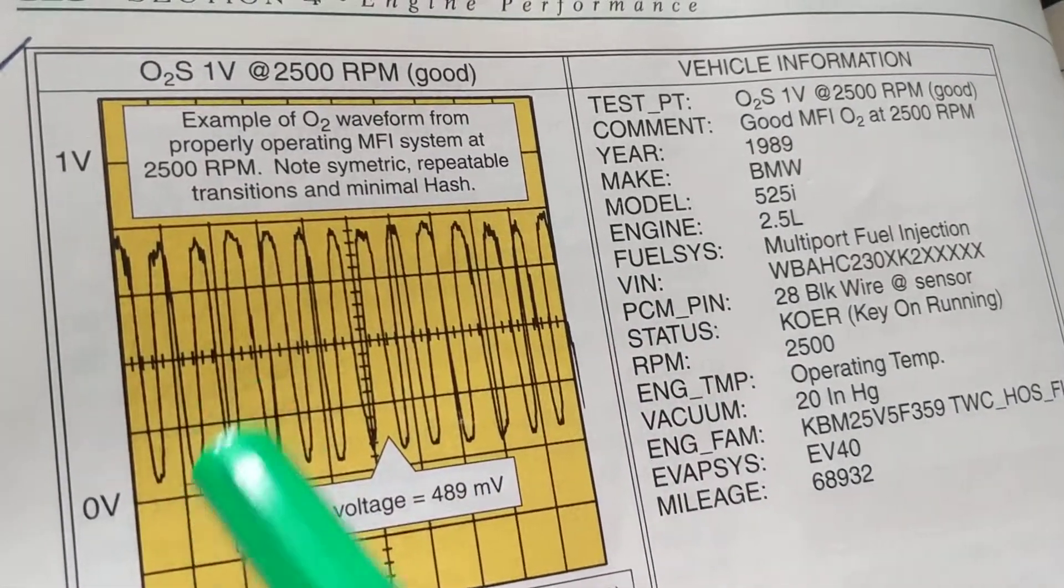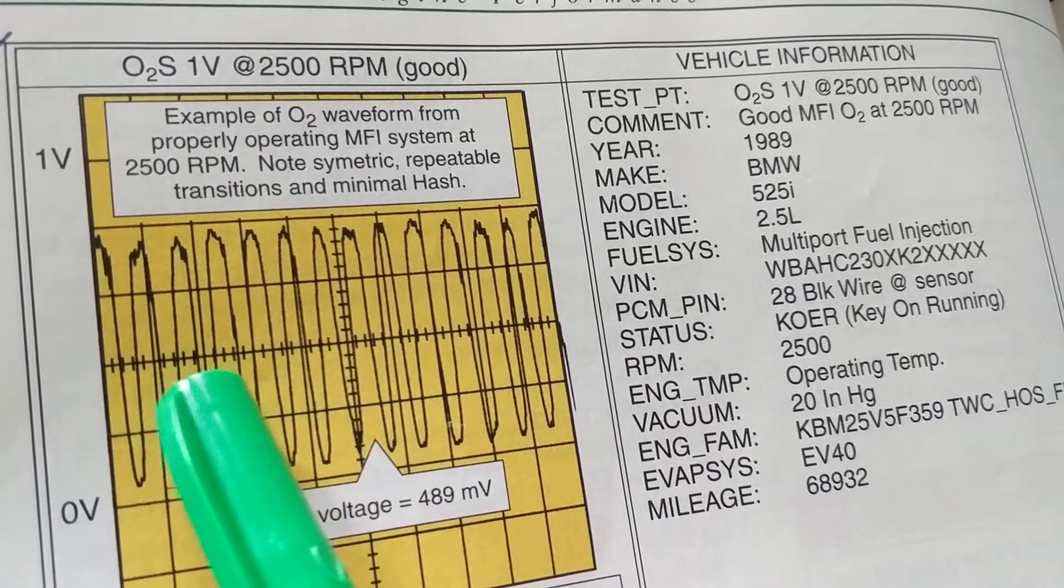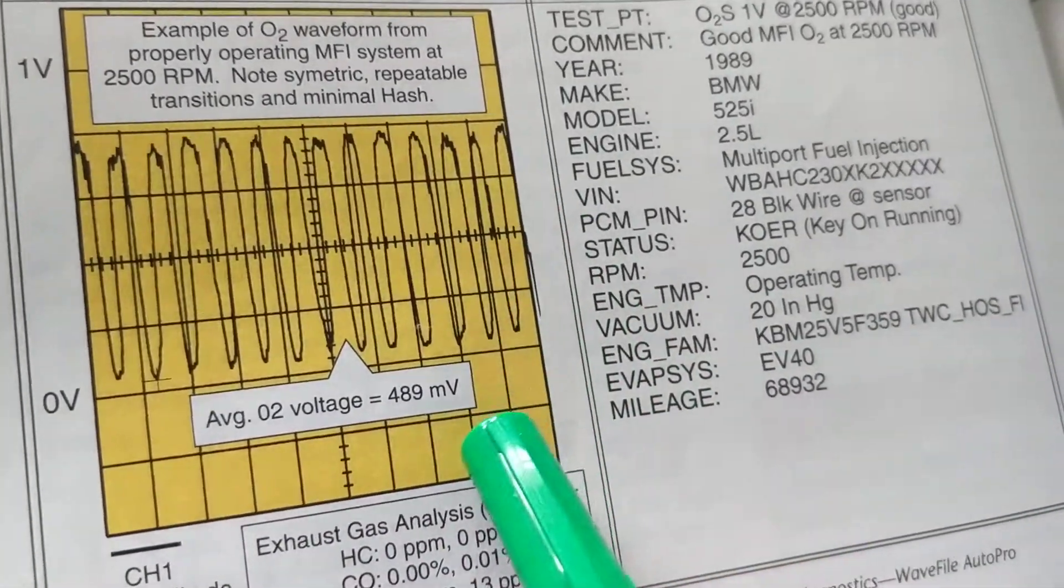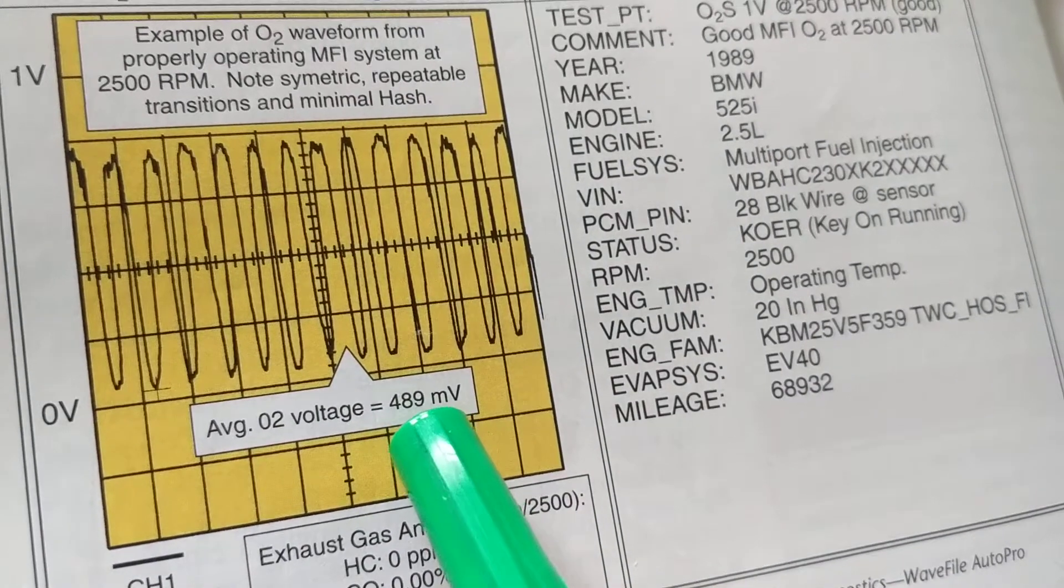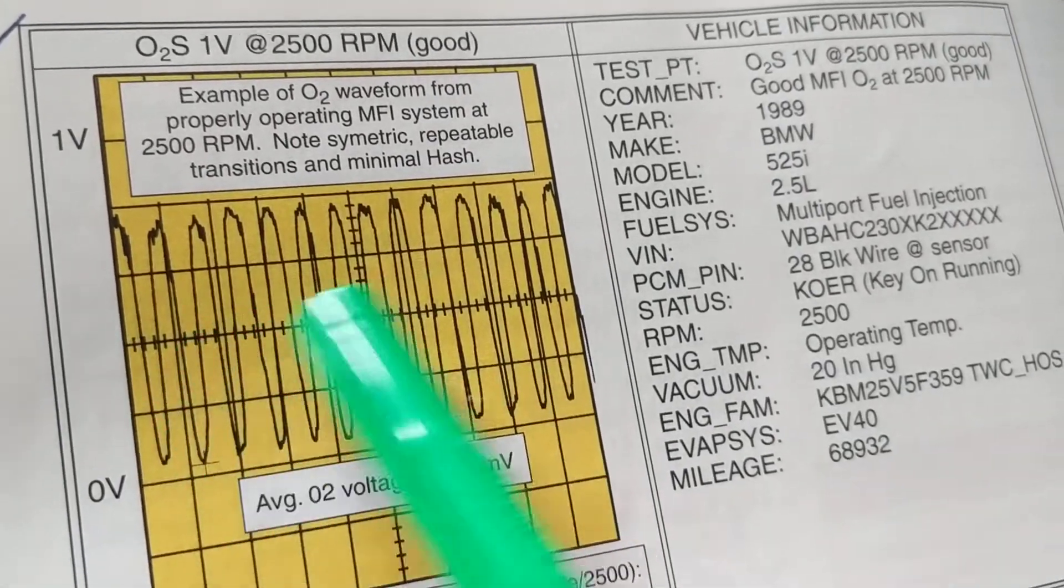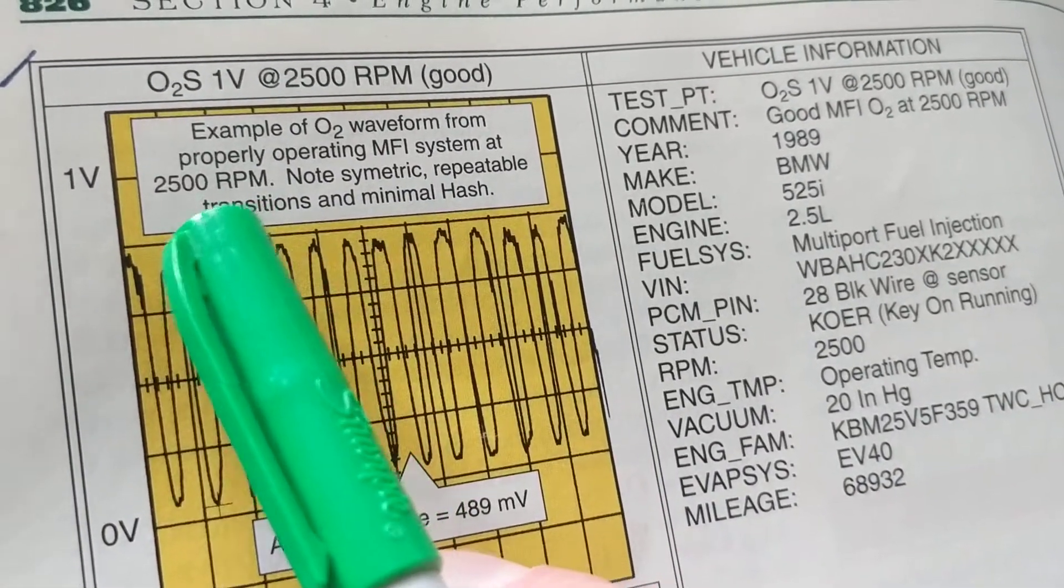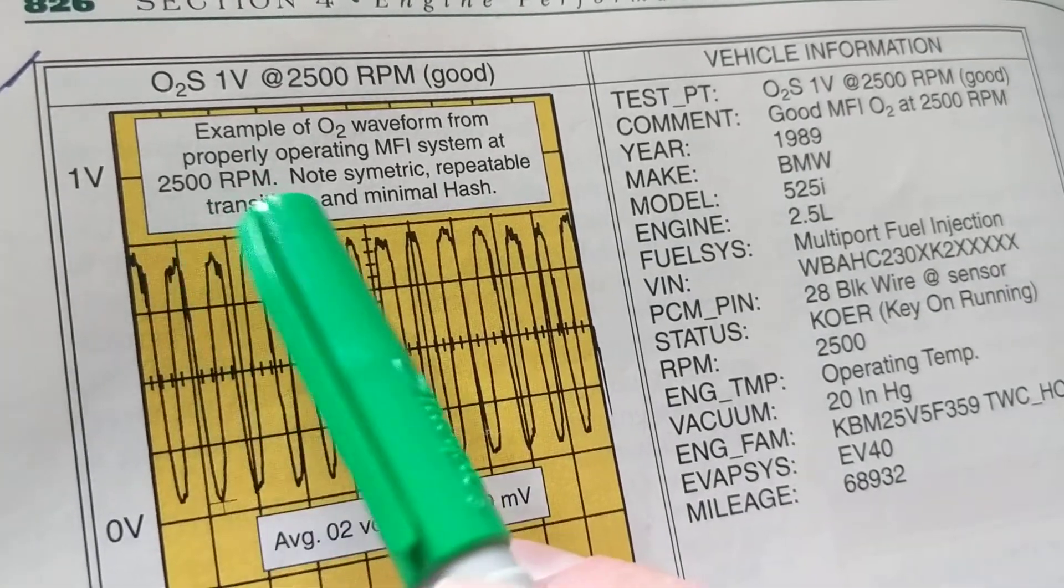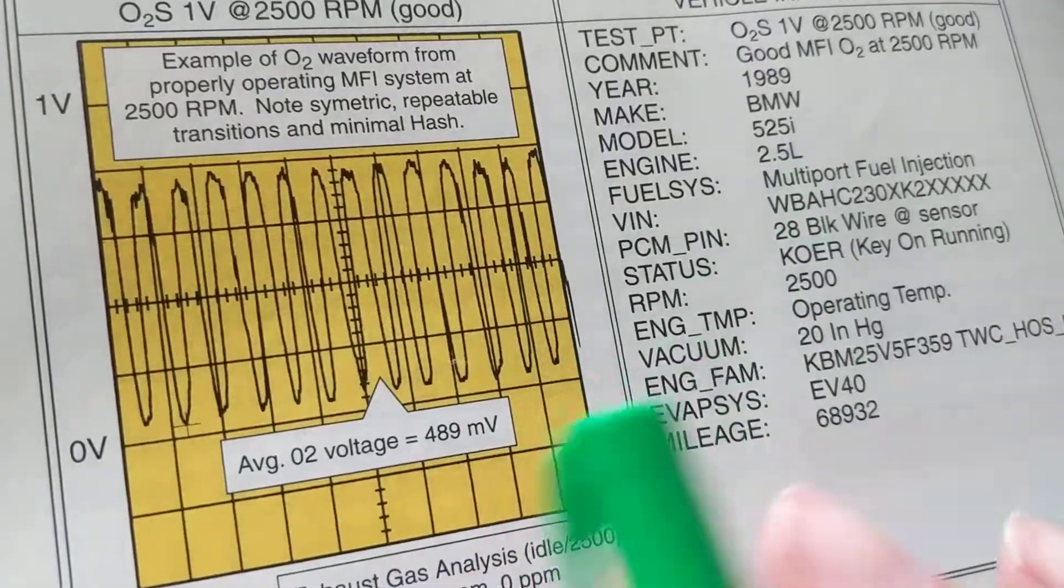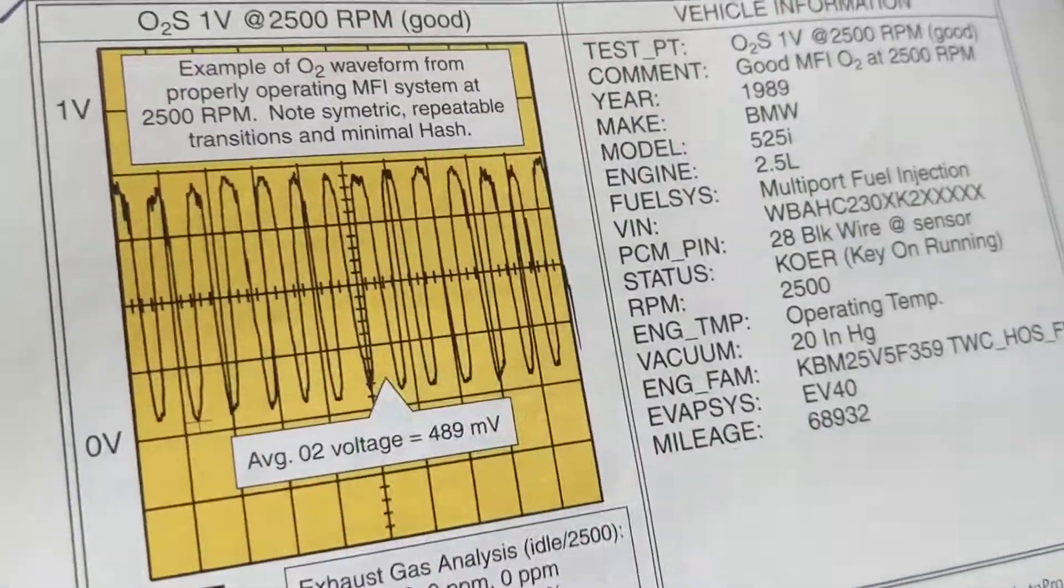From zero volts to one volt, the midpoint is around 0.5 volts or 0.45 volts, which is the average. 0.4 volts is equal to 489 millivolts, which is around the midpoint. We're going to open up to 2500 RPM and look at this signal. If you're not familiar with scopes or signals, you're going to ask, 'What am I looking at?'